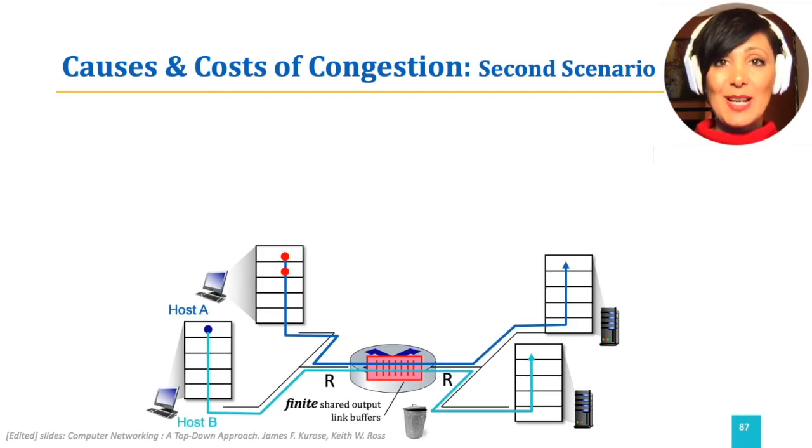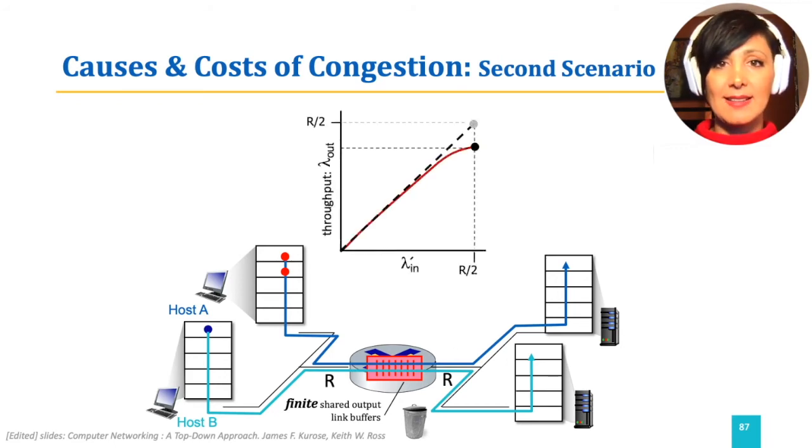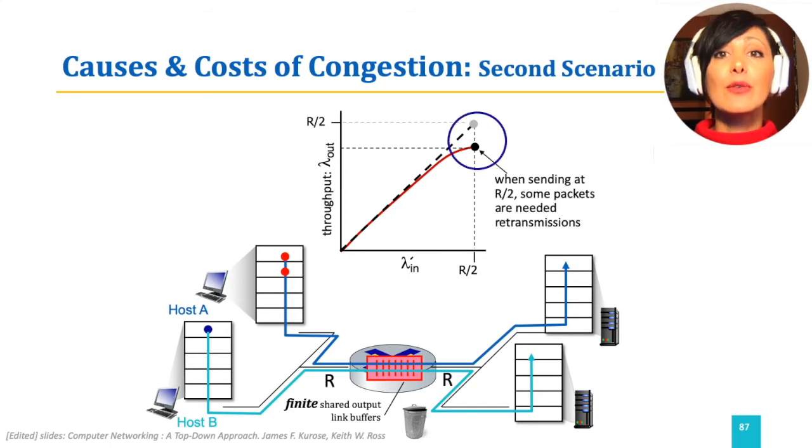With this assumption, we no longer have equal values of lambda n and lambda prime n as we reach the shared link capacity. Therefore, as the sending rate reaches half of the shared link capacity, we will see loss, and therefore retransmissions.